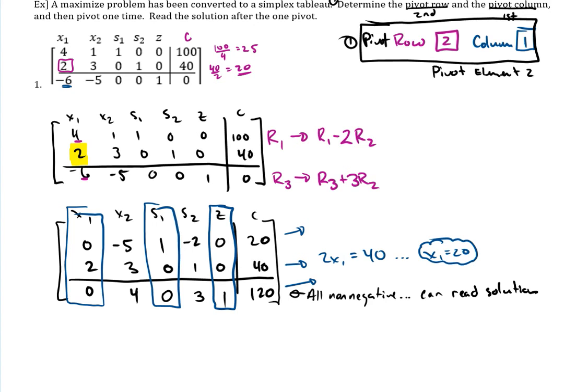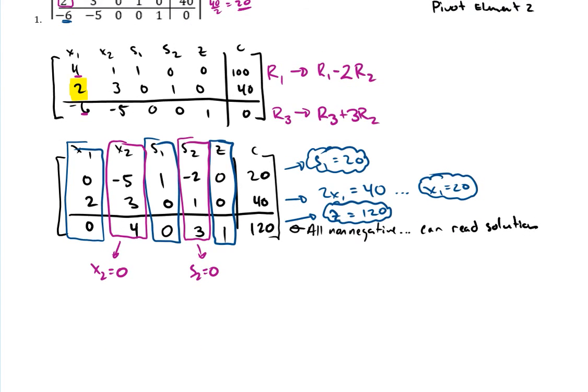The arithmetic usually isn't too bad, it's just there are a lot of steps so just be careful. So anyway, so this is actually, we only needed to pivot this once. All of these are non-negative. All non-negative. So that means we can now read the solution for real. We can read solution. If they were not all non-negative, we technically would need to pivot again. But in this problem, it said to only pivot one time anyway.